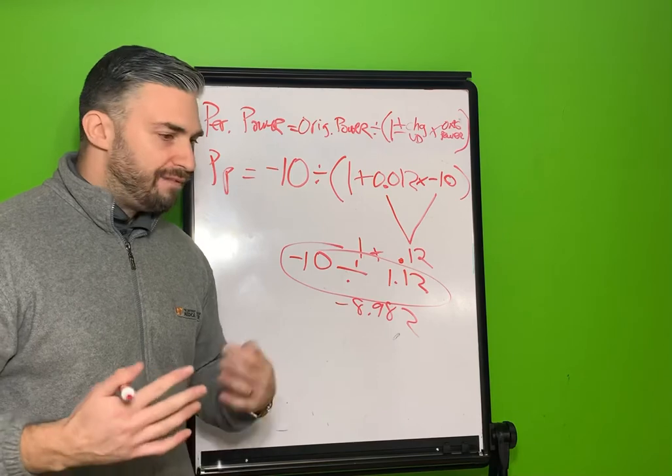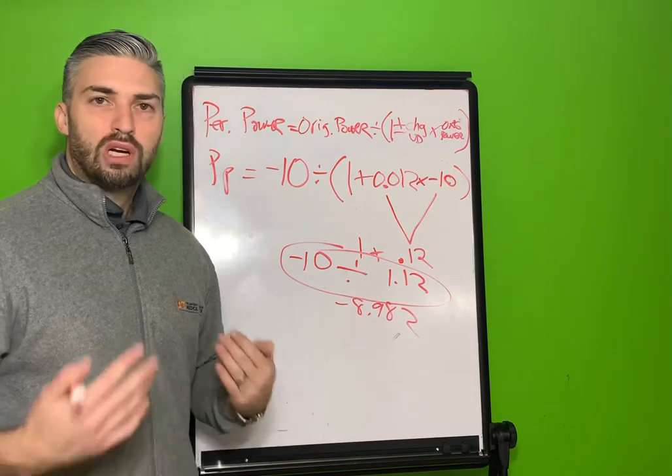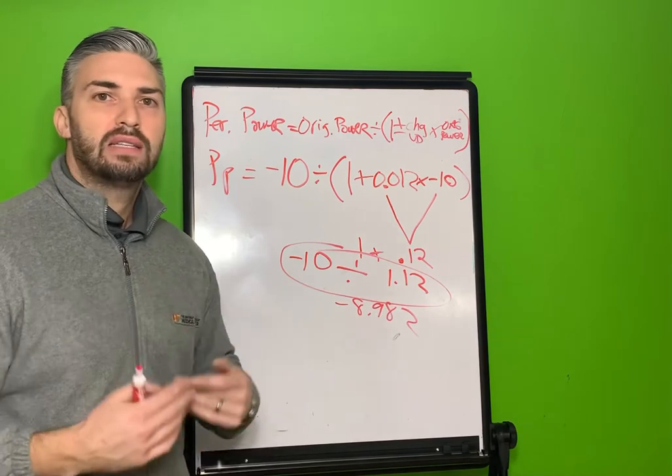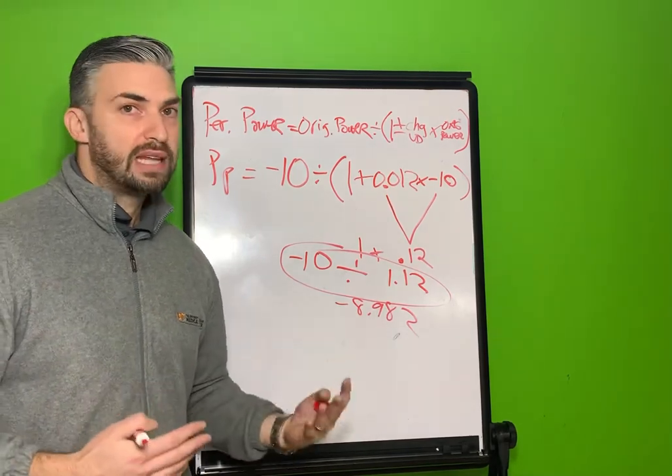Another one to remember is that a 5 diopter lens is a quarter diopter change. And because we know it becomes more plus or less minus, a negative 5 would act like a negative 4.75.